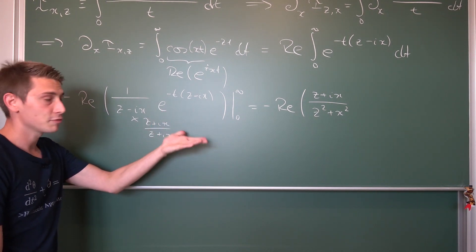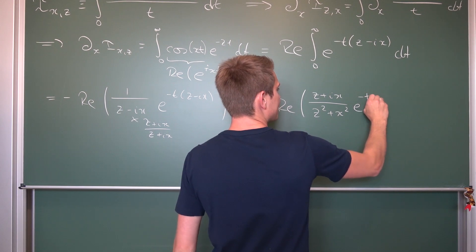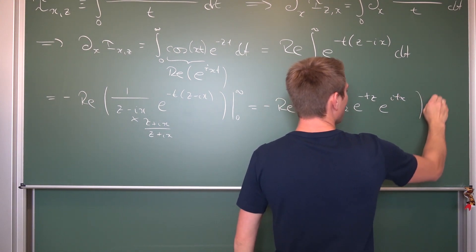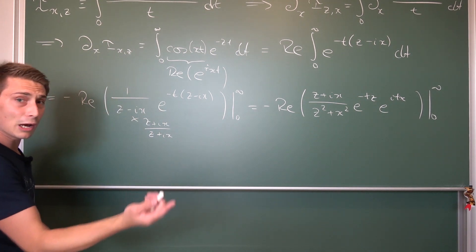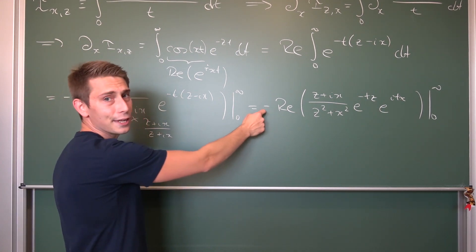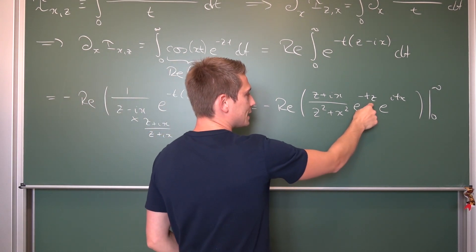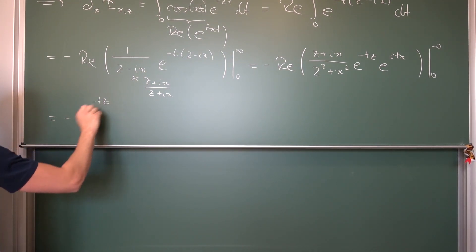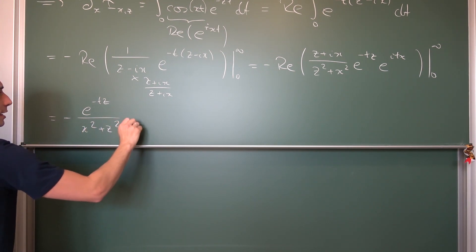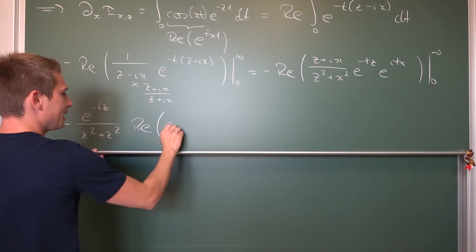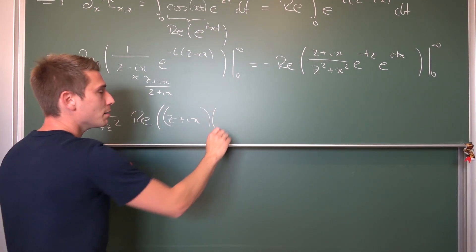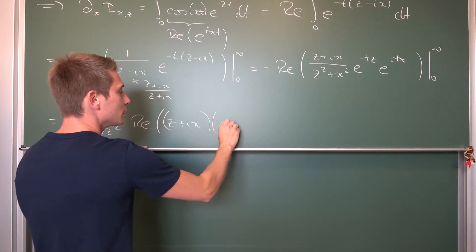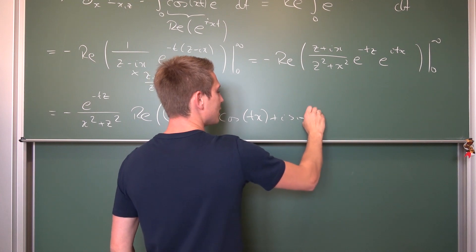We are also going to break up our exponential function: this becomes e^(−tz) · e^(itx), evaluated from 0 to infinity. Now we can bring scalars to the outside — the negative sign, and e^(−tz)/(z² + x²) — leaving us with negative e^(−tz)/(x² + z²) times the real part of (z + ix) · e^(itx). Applying Euler's formula, e^(itx) = cos(tx) + i·sin(tx).